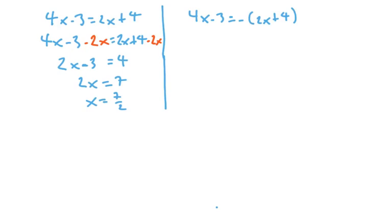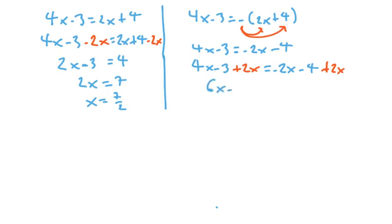On the other side, with that negative, we would want to distribute the negative across the parentheses to change both sides. That would give me 4x minus 3 equals negative 2x minus 4. Again, we need to add 2x to both sides. The 2x's will add to 0 on the right. On the left, combining like terms, we'd have 6x minus 3 equals negative 4. Add 3 to both sides. 6x equals negative 1. Divide by 6. The solution set consists of 7 halves and negative 1 sixth.